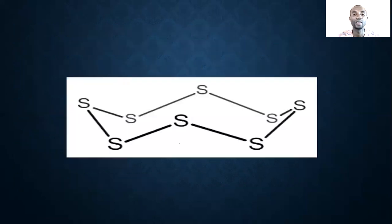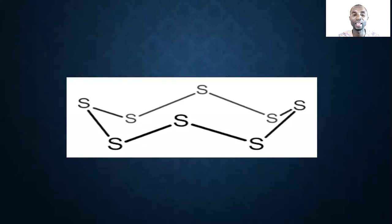The structure of sulfur looks like a crown-shaped ring. Counting the atoms: one, two, three, four, five, six, seven, and eight — this is the structure and shape of sulfur.